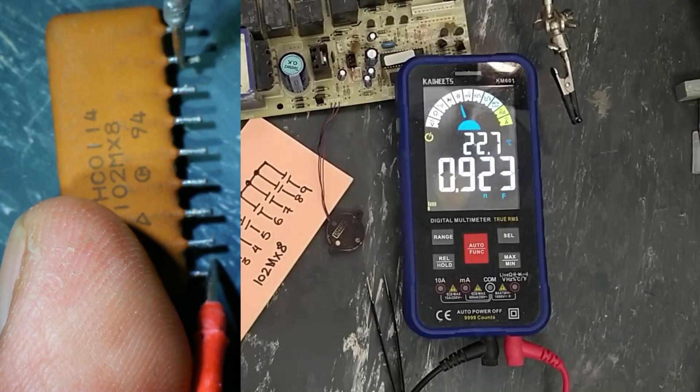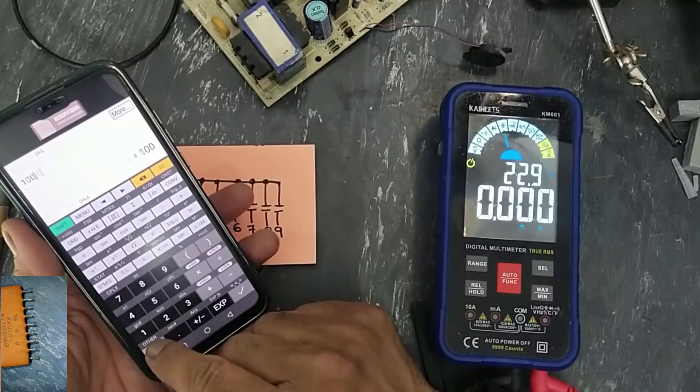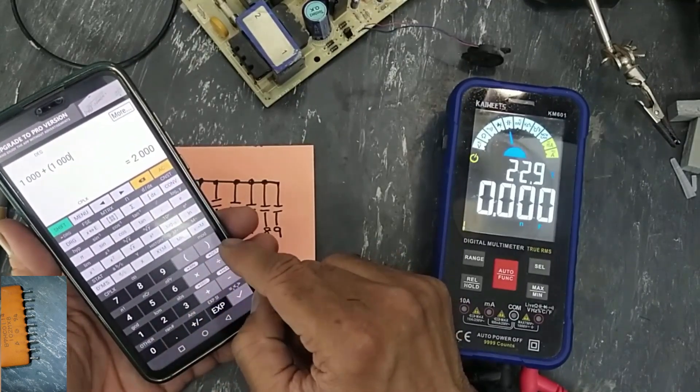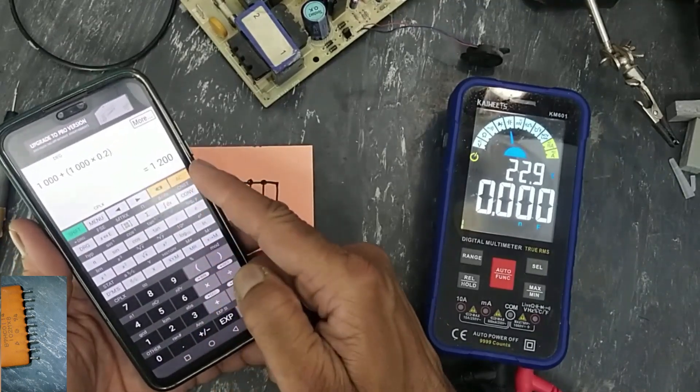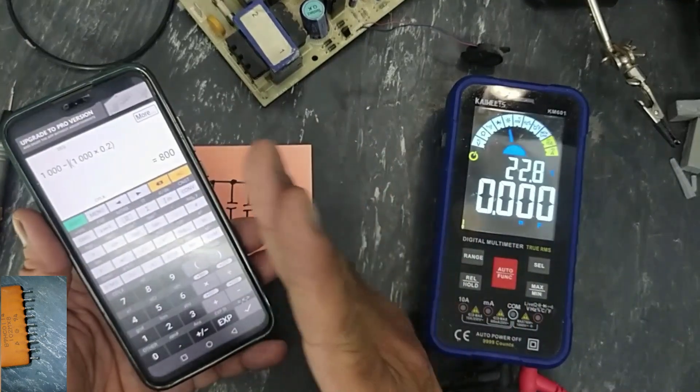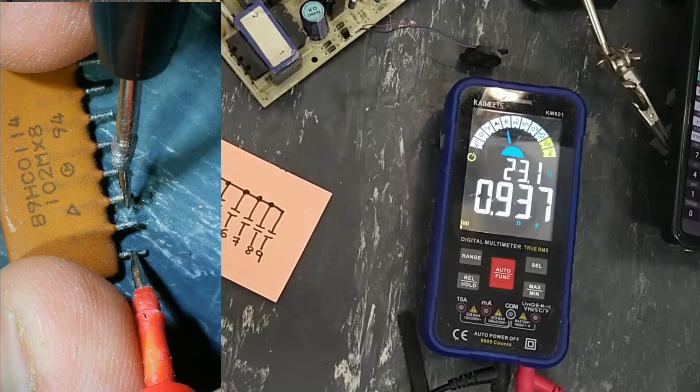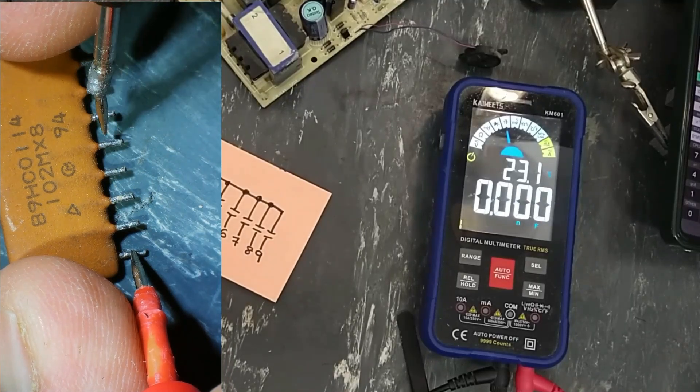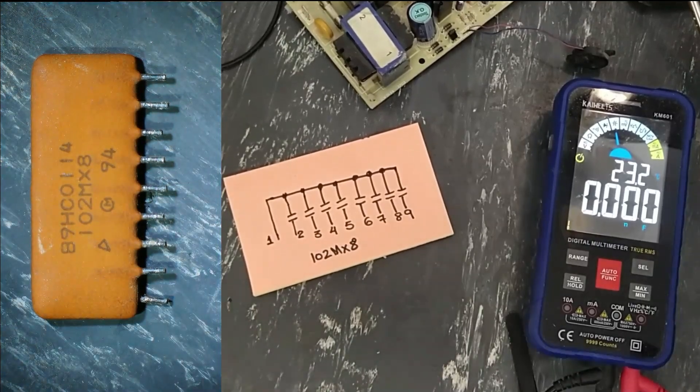Plus minus 20 percent, so all capacitors are within range. One thousand plus two hundred is one thousand two hundred. If we minus, eight hundred. From eight hundred to one thousand two hundred. 937 within range, 956 within range. So in this way we can verify this component.